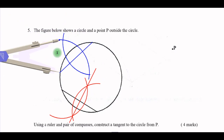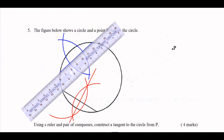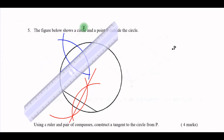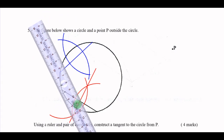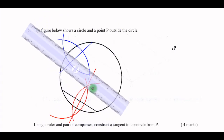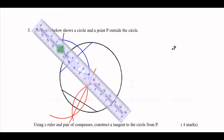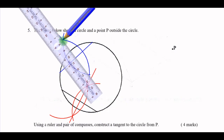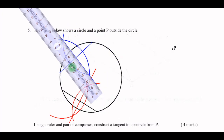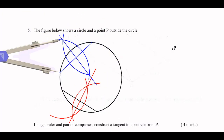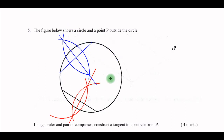I put another arc at a particular point, then use the ruler and join the intersection of the axes. I draw the line and where the two bisectors meet, that is the center of the circle.